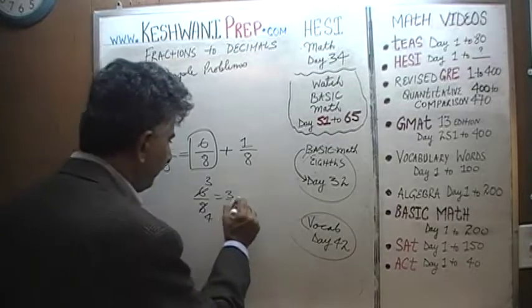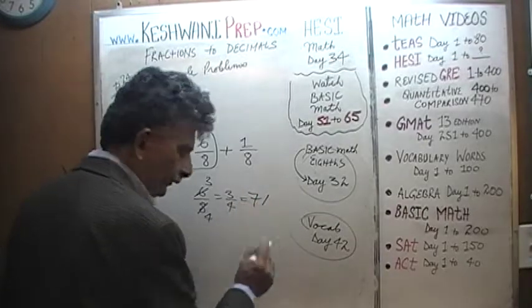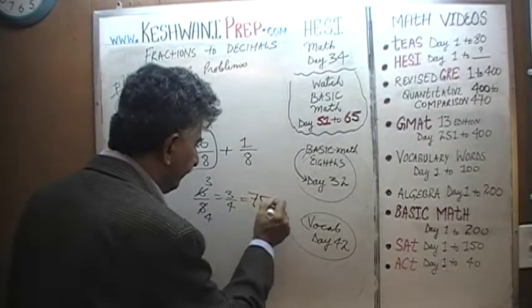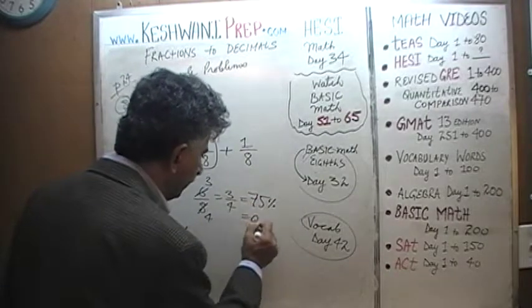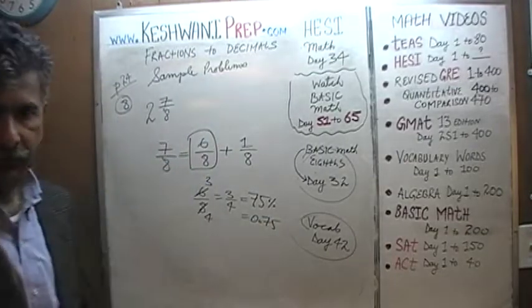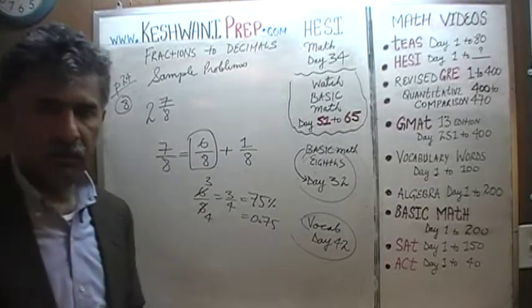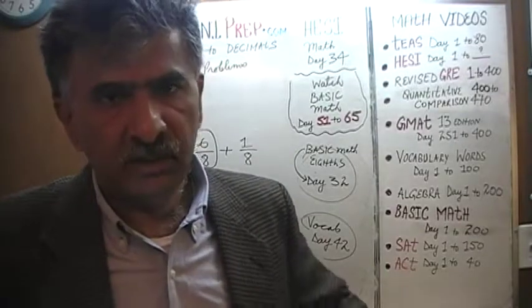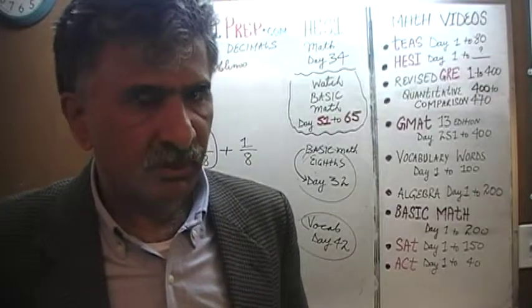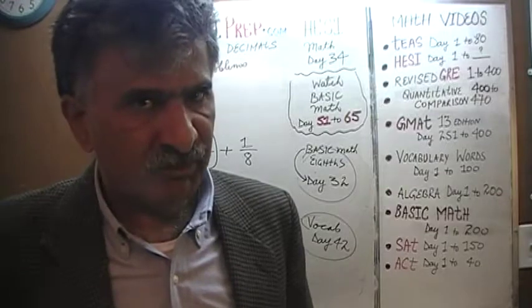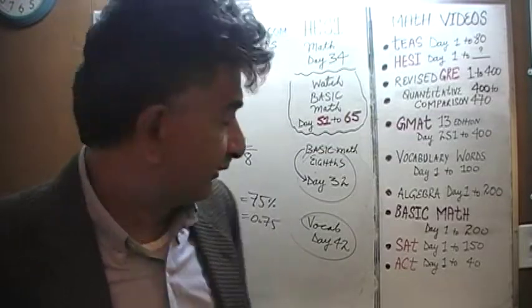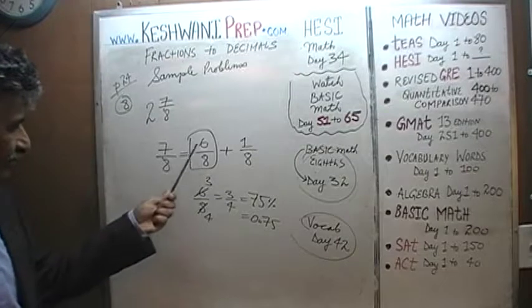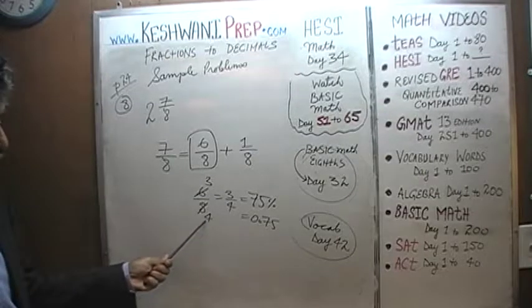And we know that because a quarter of anything is 25%. If one quarter is 25%, then 3 quarters would have to be 3 times 25, which is 75%. So 6/8 is just 3 quarters incognito — 6/8 is just 3 quarters sitting there in disguise, and we know it is 75%.